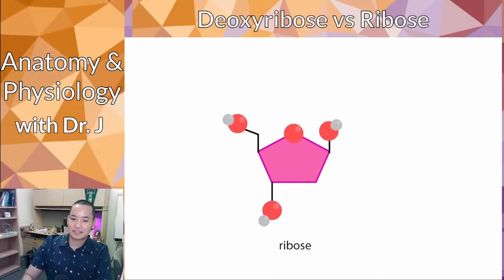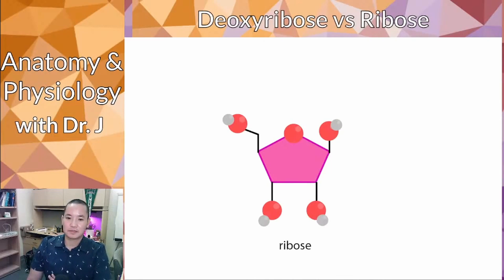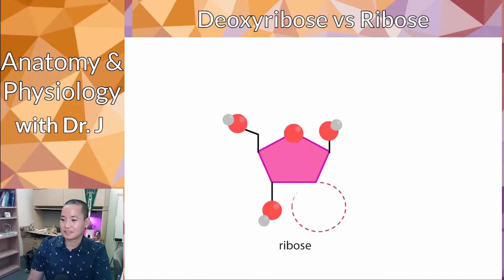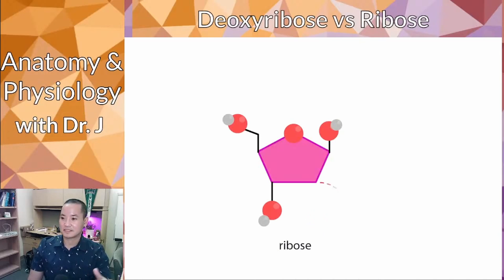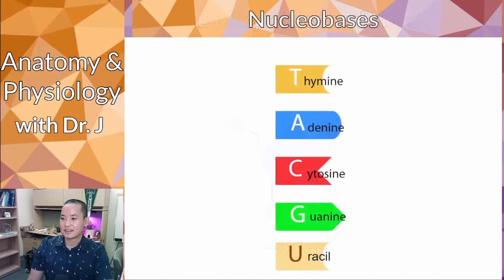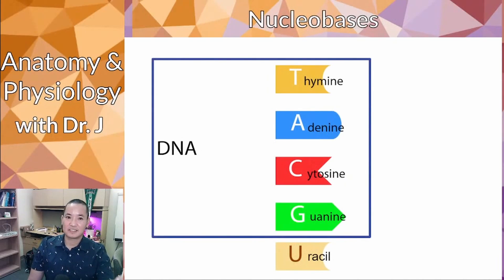Back to ribose: ribose is a sugar, but what is deoxyribose? What's the difference? The difference is one oxygen atom — deoxyribose has one less oxygen. Whenever you see that prefix 'deoxy,' think of it like decontamination: you're removing something. Deoxyribose is ribose minus one oxygen. That's the difference between deoxyribose and ribose, and it's what distinguishes DNA from RNA.